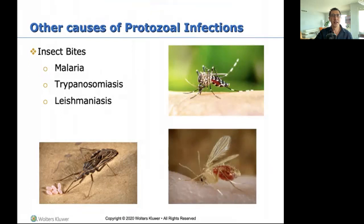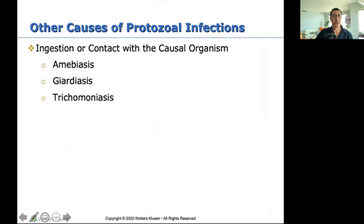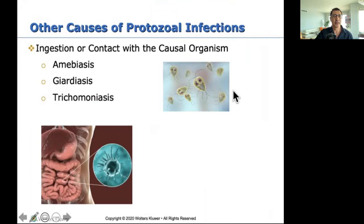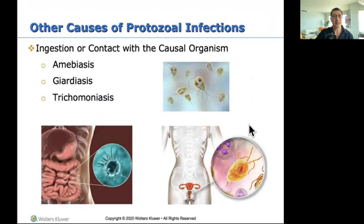Other causes include insect bites — malaria. Look at this red one here, that's the sand fly. I think this is trypanosomiasis, caused by this bug. Other causes of protozoal infections in the GI tract include amoebiasis and giardiasis, and also trichomoniasis — a sexually transmitted infection caused by a parasite, related to hygiene.